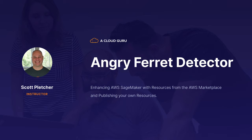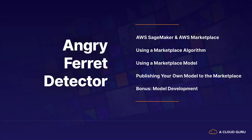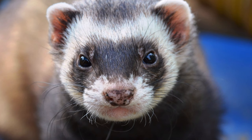My name is Scott Pletcher and I am going to share with you today my implementation of an angry ferret detector. In this project we're going to go over how to use SageMaker and the resources in the AWS Marketplace, specifically algorithms and models. We're also going to go over how to publish our own model to the Marketplace. But first let me orient you to the real problem — something I call the great ferret menace.